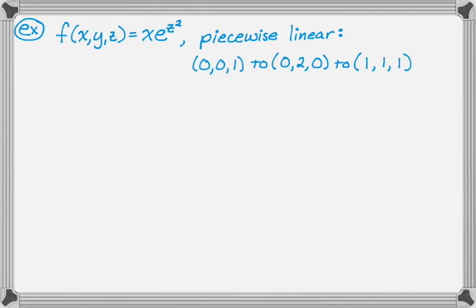So we have f(x,y,z) = xe^(z²). And our piecewise linear path goes from (0,0,1). So it starts at (0,0,1). It goes to (0,2,0). And then from (0,2,0), it goes to (1,1,1). So there's only two parts to this path, which is nice because that means we have to do two line integrals instead of more.